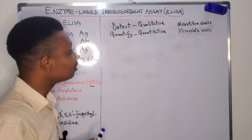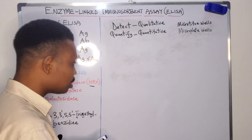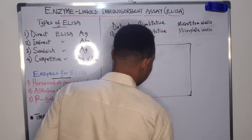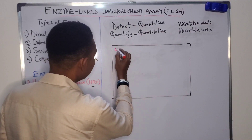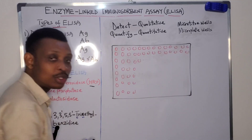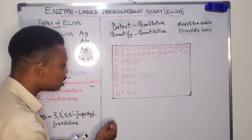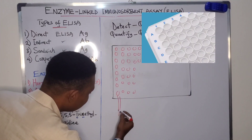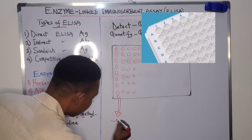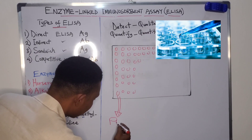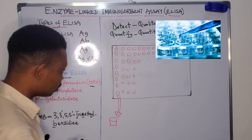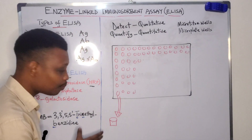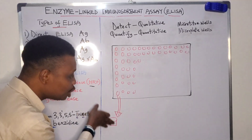The ELISA test kit consists of about 96 wells. The ELISA technique takes place in each of these wells. Let's isolate one of these wells to examine it more closely — this represents one of the wells in which the ELISA technique is performed.